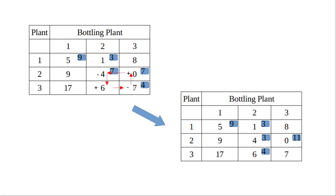The rule for the loop is: start from the unoccupied cell, and each subsequent corner must be an occupied cell. For example, starting from cell (3,2), going to cell (3,3), then to cell (1,3), then back to cell (1,2) forms a loop — but this loop cannot be taken because cell (1,3) is an unoccupied cell. All corners except the starting cell must be occupied. The loop can be a square or a rectangle, but each corner must be occupied and only one cell — the starting cell — may be unoccupied.